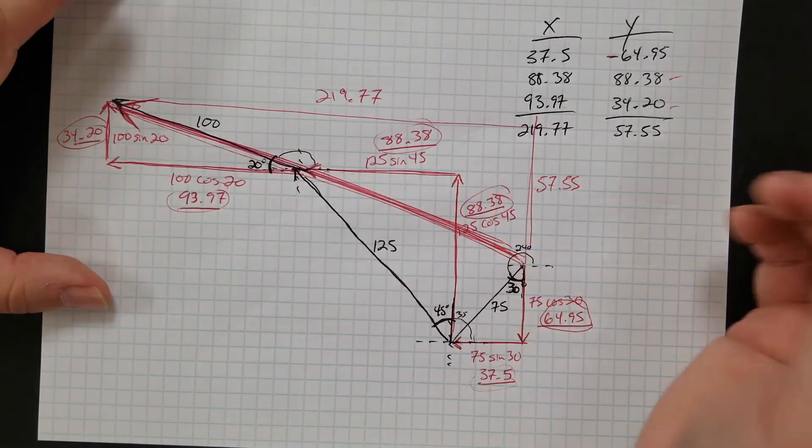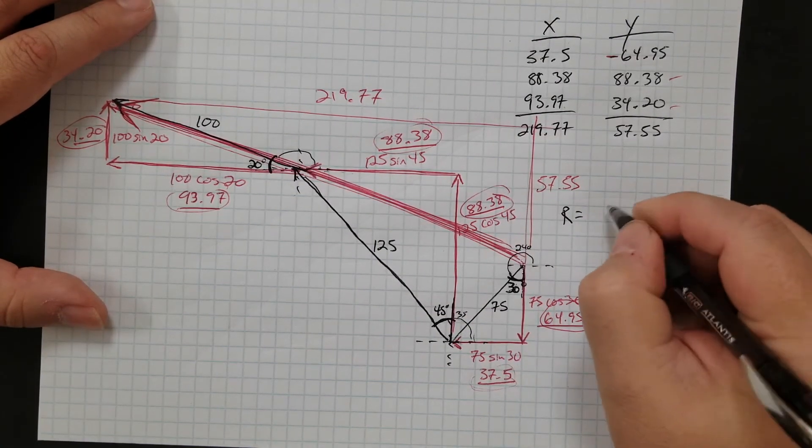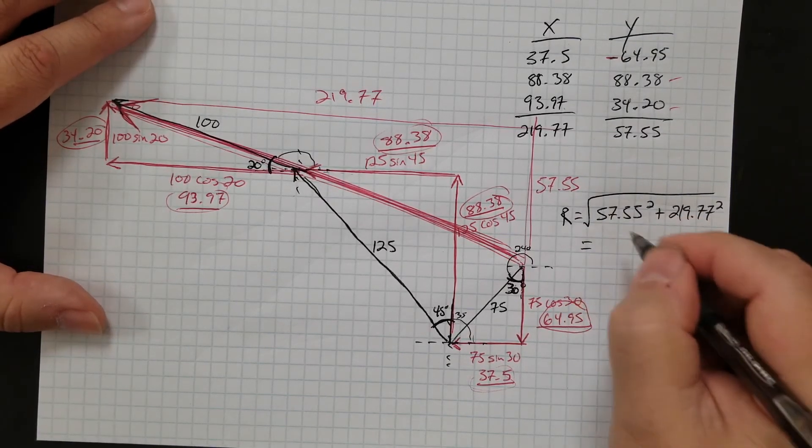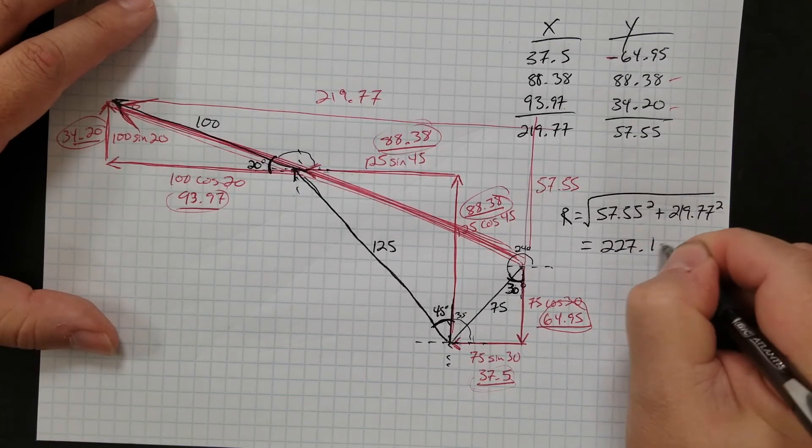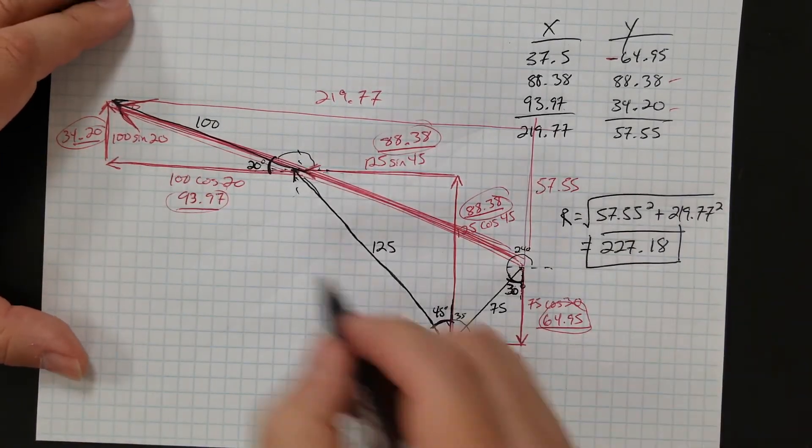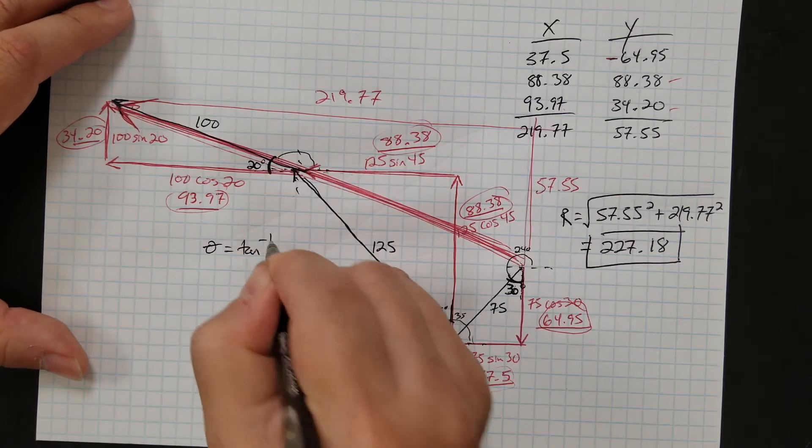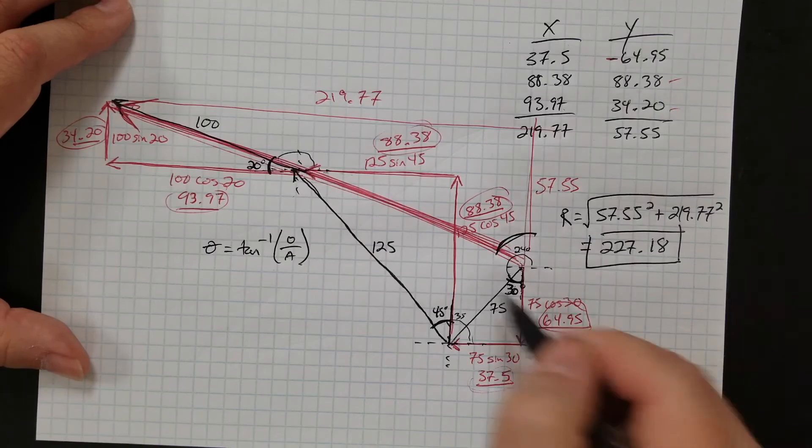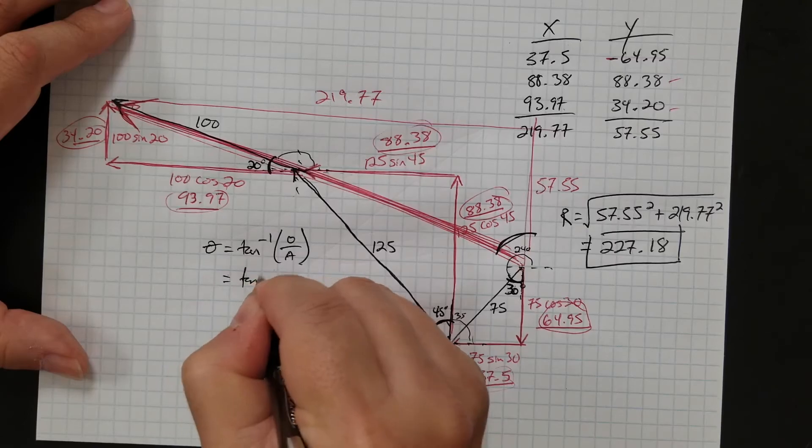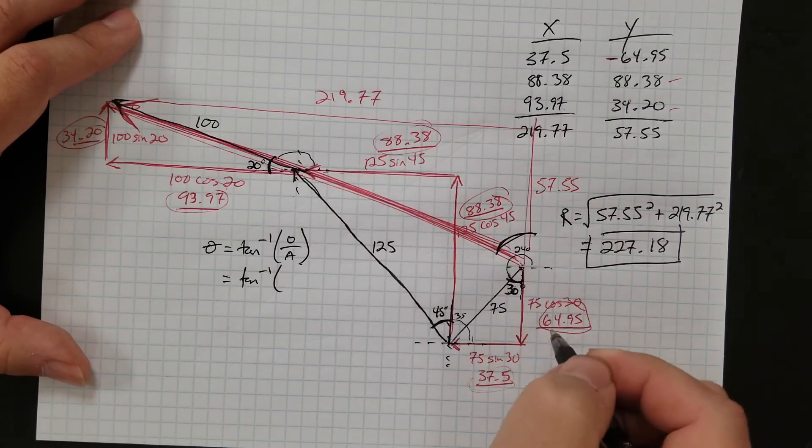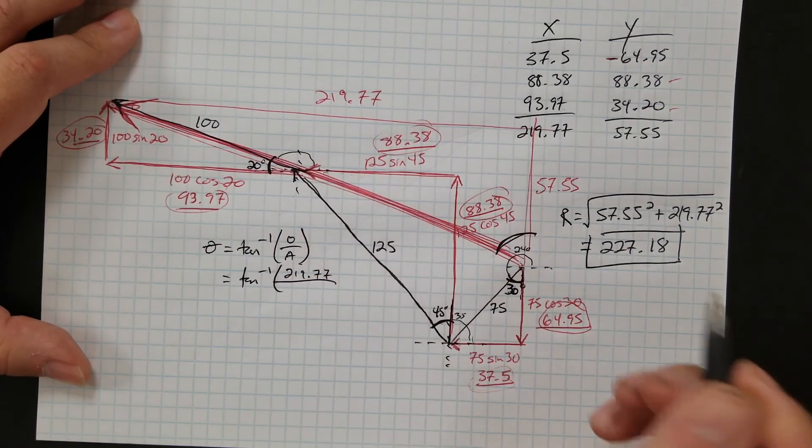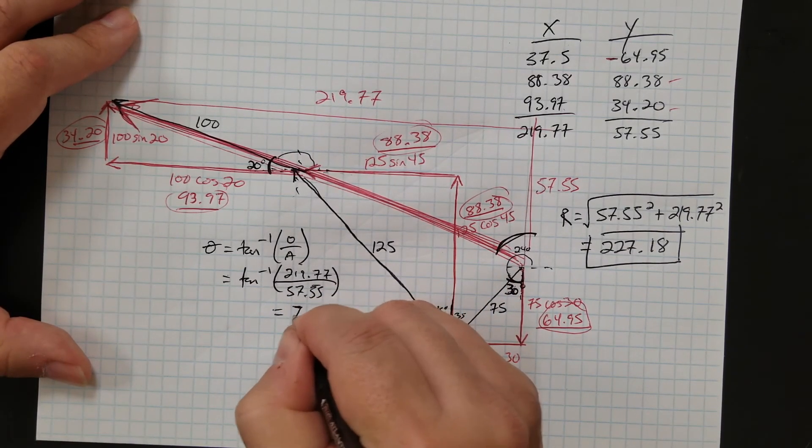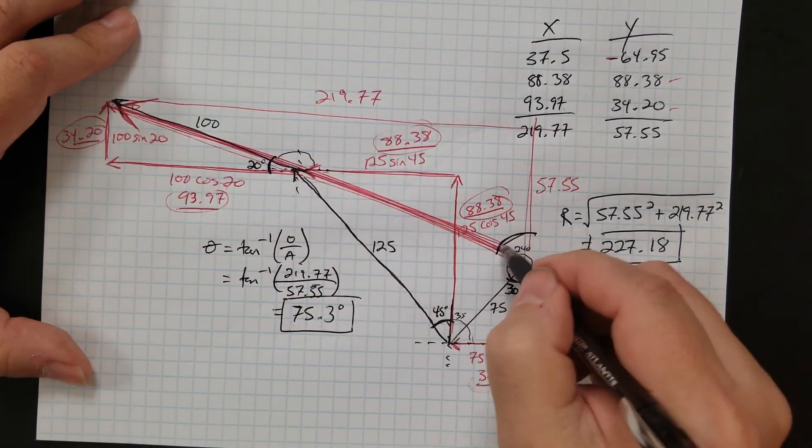And so, again, now I'm done. Once I got this, I can do Pythagorean theorem. So r is equal to the square root of 57.55 squared plus 219.77 squared, because Pythagorean theorem, and if you do this, it gives you 227.18. So that's how long r is. Okay? And so, again, if I want the angle, the angle is the inverse tangent of opposite over adjacent. I'm just using that. So the angle from, I'm going to pick this angle. Because once you know one angle, you can subtract or add 90s and figure the rest of them out. So it's going to be the inverse tangent of opposite is going to be 219.77 over 57.55. And if you do that, you get 75.3 degrees.